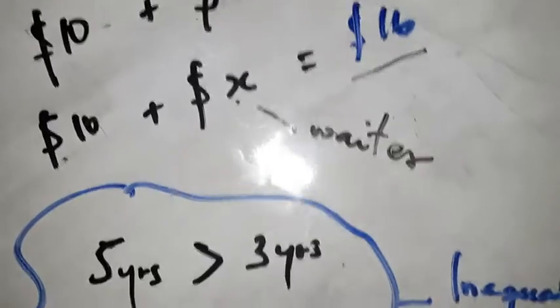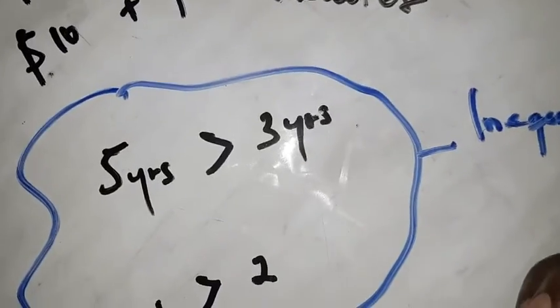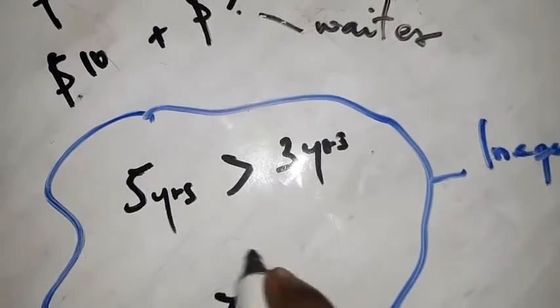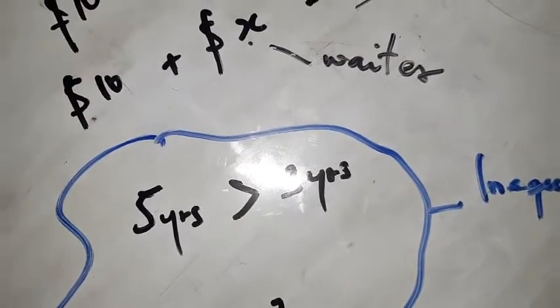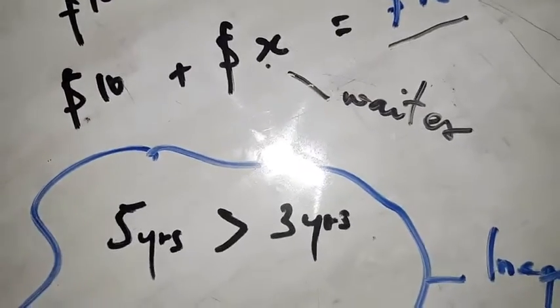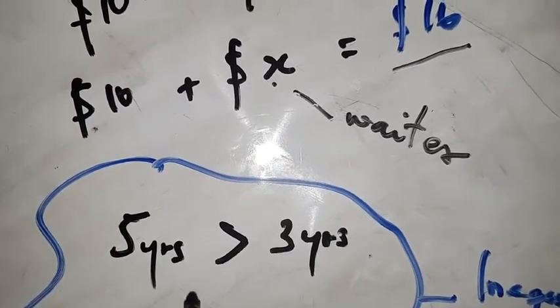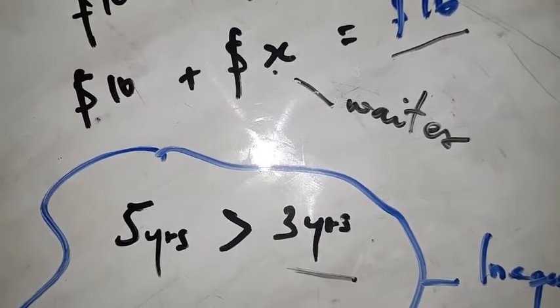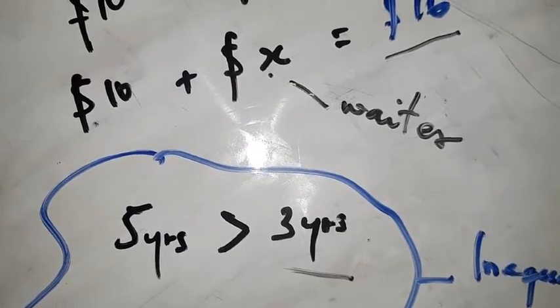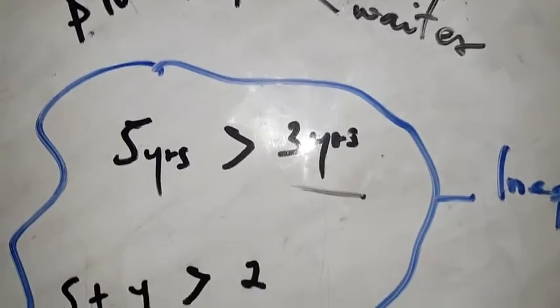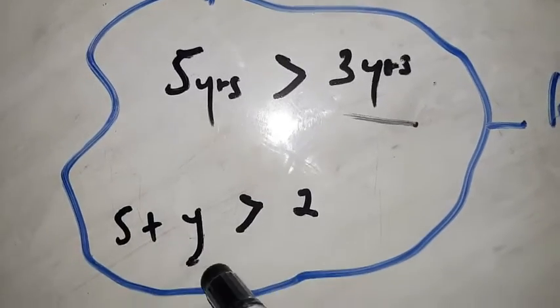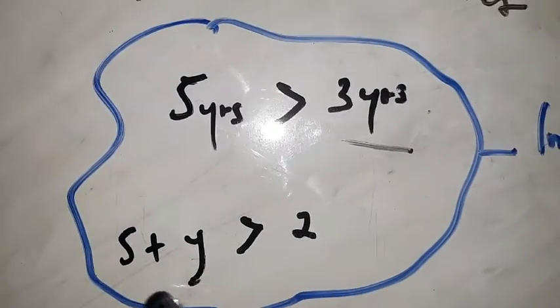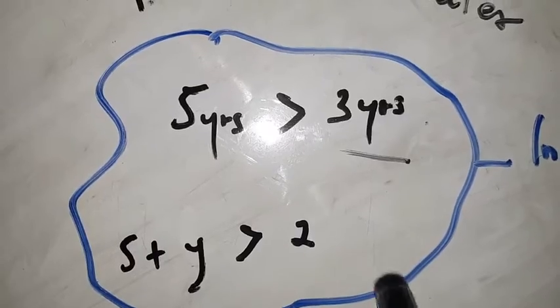Now look at the inequality. The difference between the two is that this involves a range - it starts from somewhere and so on. For sure, a five year old boy is older than a three year old boy, that's something everybody knows. What about if I say 5 + y is greater than 2? This guy is missing, so how do you solve this?